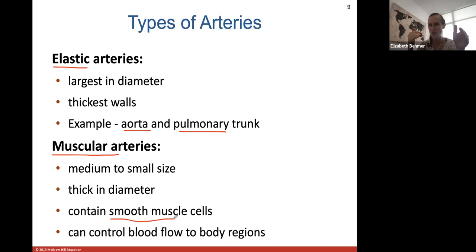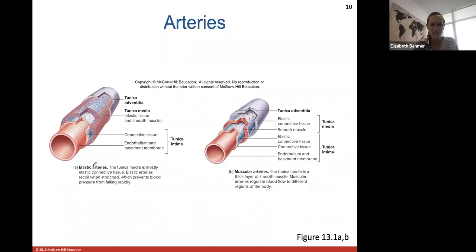Here's an elastic artery showing the tunica intima, tunica media made up of a lot of elastic tissue, and the tunica adventitia. Here are muscular arteries where you see a very thick layer of tunica media containing a lot of smooth muscle and elastic tissue.